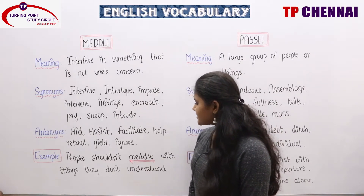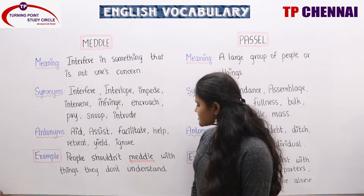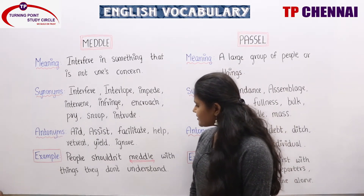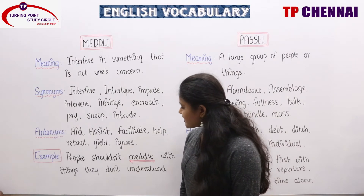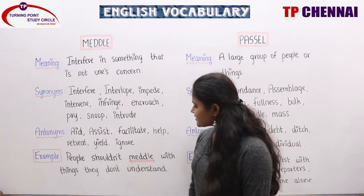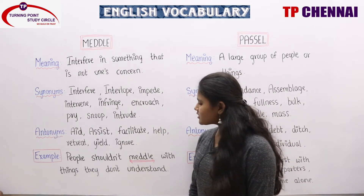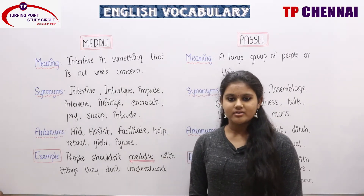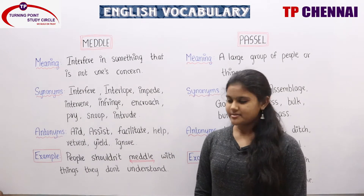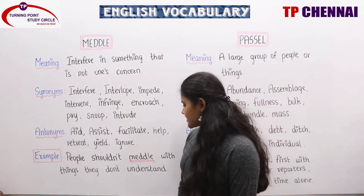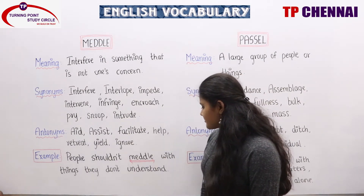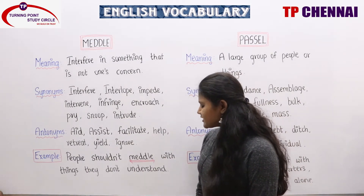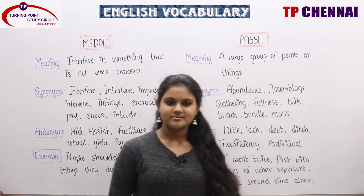Antonyms: aid, assist, facilitate, help, retreat, yield, ignore. All these words can be related to antonyms. Example: People shouldn't meddle with things they don't understand.